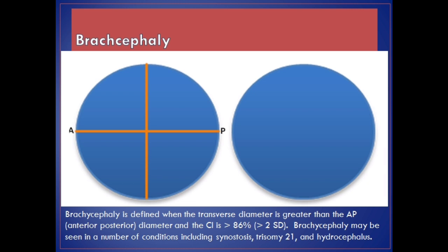Brachycephaly is defined when the transverse diameter is greater than the AP (anterior-posterior) diameter and the CI is more than 86%, more than 2 SD. This may be seen in a number of conditions, including synostosis, trisomy 21, and hydrocephalus.